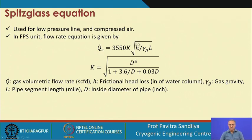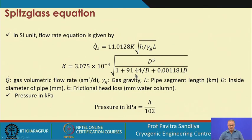There is another equation called the Spitzglass equation, generally used for low pressure lines. This is the expression for the Spitzglass equation, where H is the frictional head loss in inches of water column, and the gas gravity and the coefficient K are given in terms of the inside diameter of the pipeline. The similar expression is given for SI units, where the coefficient values have changed for the different unit systems.